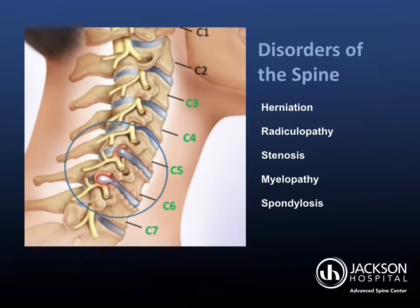Disorders of the spine often cause compression on the spinal cord and nerves, resulting in pain. Examples of spine disorders include: herniation, which is tissue protruding through an opening, such as a herniated or ruptured disc; radiculopathy, caused by compression of the nerve root; stenosis, a narrowing of the spinal canal; myelopathy, caused by compression of the spinal cord; and spondylosis, which is degeneration or deterioration of the spine.